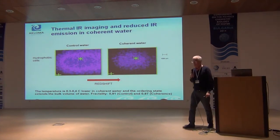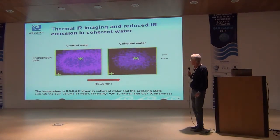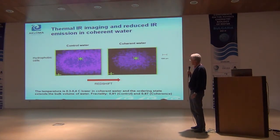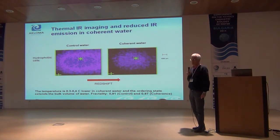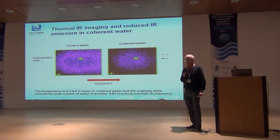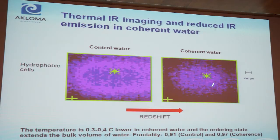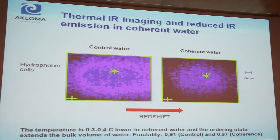Here are two images from our thermal infrared imaging technology — controlled water to the left and coherent water to the right. You can see there is a red shift, as we call it — a decreasing temperature of approximately 0.3 to 0.4 degrees centigrade, dependent on this shift into the coherent state. And perhaps you can also see that the ordering is quite different between the two images. We found that fractality increased from 0.91 to 0.97.